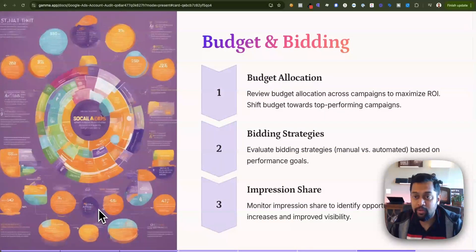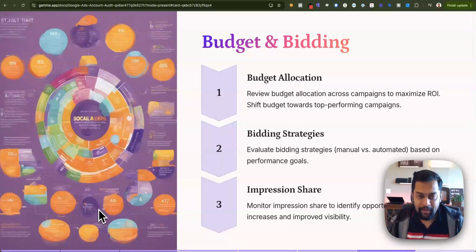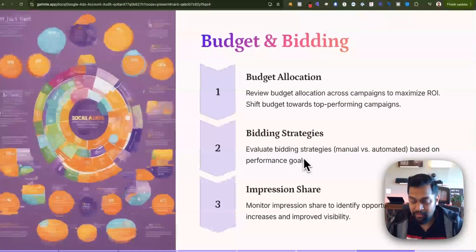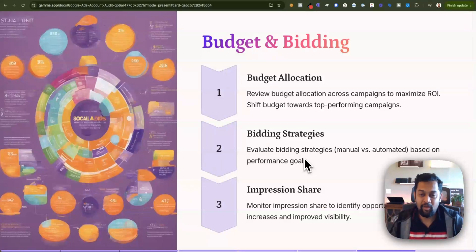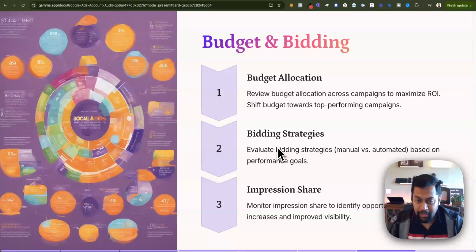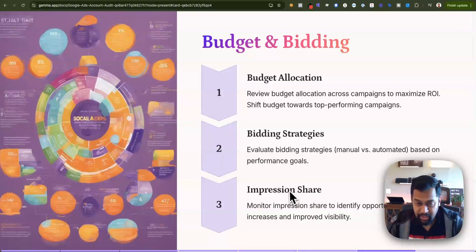Budget and bidding is also important. Ensure that you're allocating the right amount of budget. These days it's mostly automated bidding strategies — return on ad spend, cost per acquisition, cost per lead, maximize conversions, maximize clicks — so many options. Depending on the campaign objective, choose the right bidding strategy.